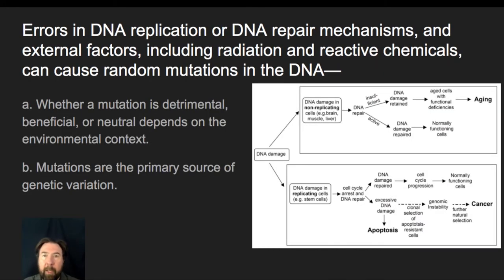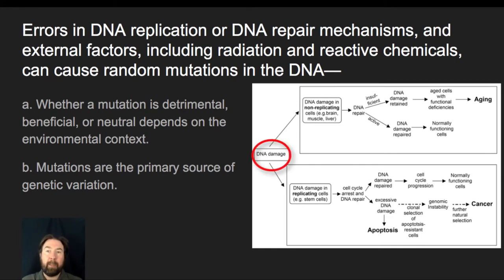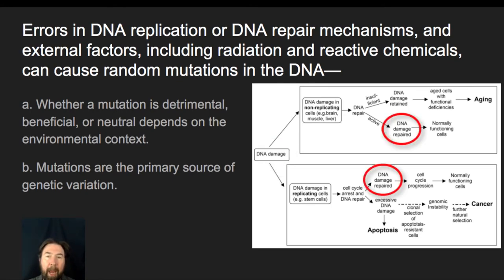Errors in DNA replication or DNA repair mechanisms and external factors — including radiation, reactive chemicals, or random mutations in DNA — can be detrimental, beneficial, or neutral depending on the environmental context. We know that if DNA is damaged, that doesn't necessarily mean it will lead to a mutation in those cells. Cells actually have very strong selective pressure to repair DNA damage. When DNA is damaged in a non-replicating cell, we undergo a process of DNA repair to actively repair and return cells to normal function.